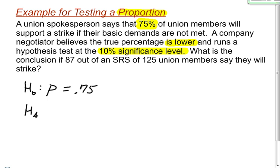The alternative hypothesis is also going to have a P for the population proportion, and 0.75 is also going to be tested. It says the company negotiator believes that the true percentage — the P, the true percentage — is lower. In other words, it's less than. So that's how I would write my null and alternative hypothesis.